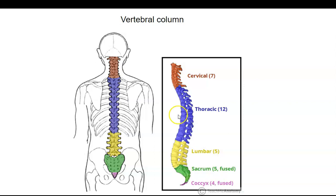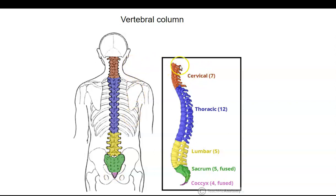Now let's look at the vertebral column — that's all the vertebrae. There are seven cervical vertebrae, which are the vertebrae in the neck. There are 12 thoracic vertebrae, which are easy to spot because the thoracic vertebrae all articulate with a rib. There are five lumbar vertebrae. The sacrum is made up of five fused vertebrae, and the coccyx is made up of four fused vertebrae. We number the cervical vertebrae C1 through C7.